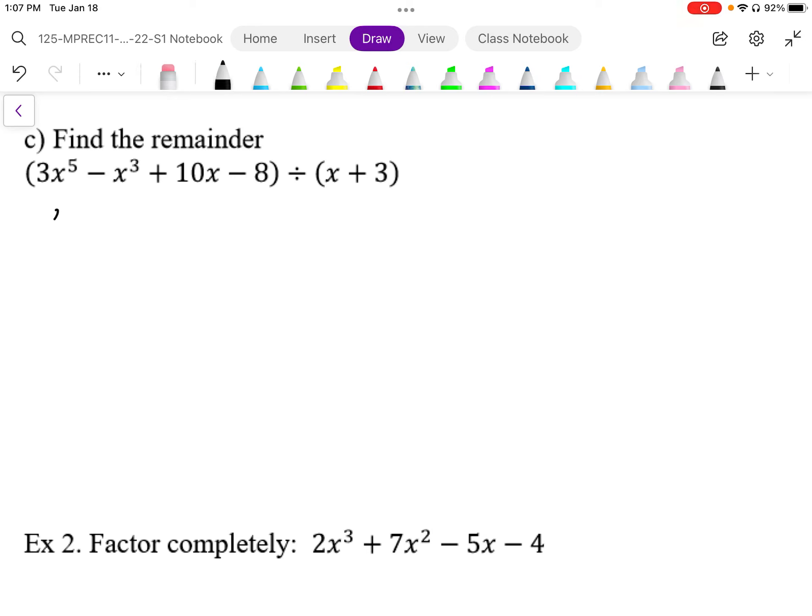What we can state for the remainder theorem is if we substitute the factor, the zero term, which in this case is x equals negative 3 from the factor, so this x comes from here, this is equal to the remainder.